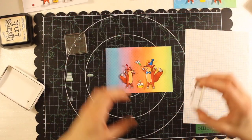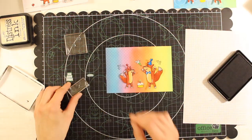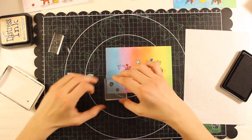Now on this card, I'm going to stamp the confetti in black directly on the background.